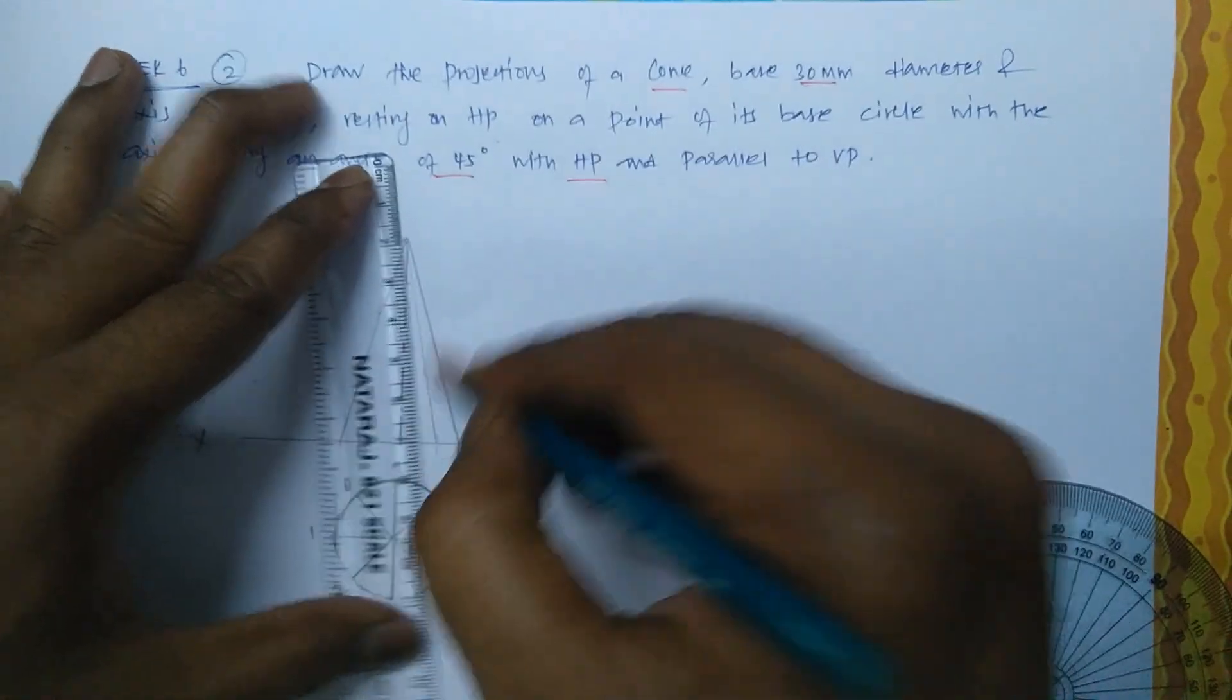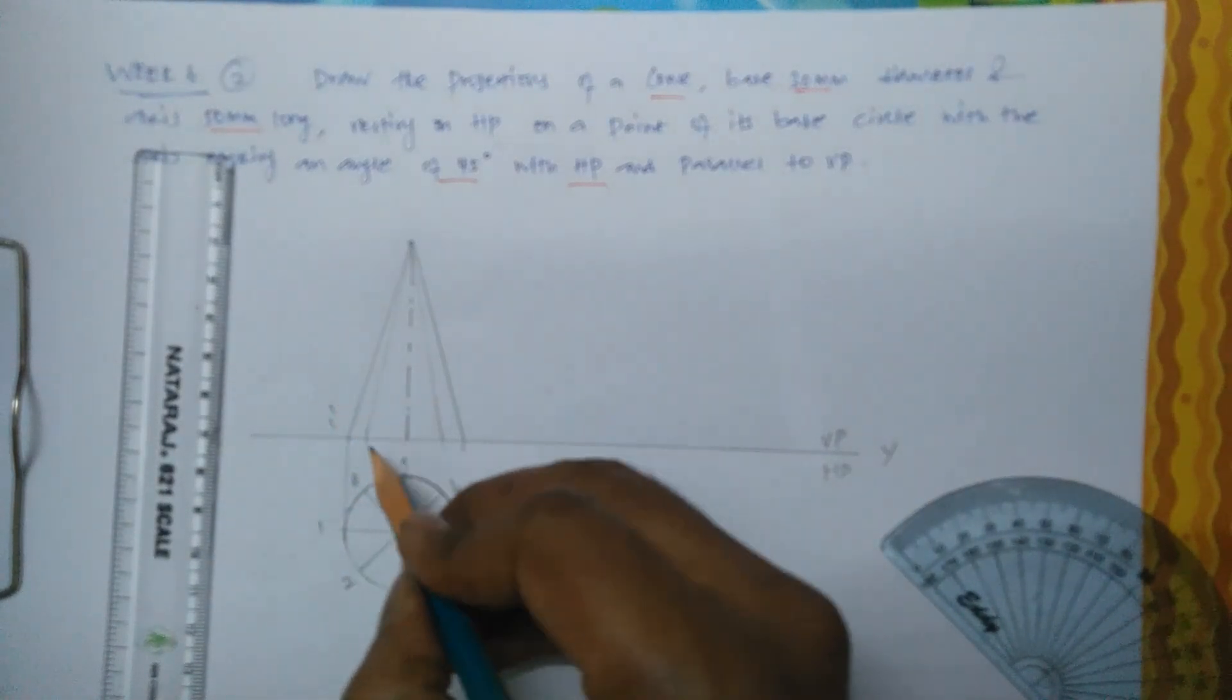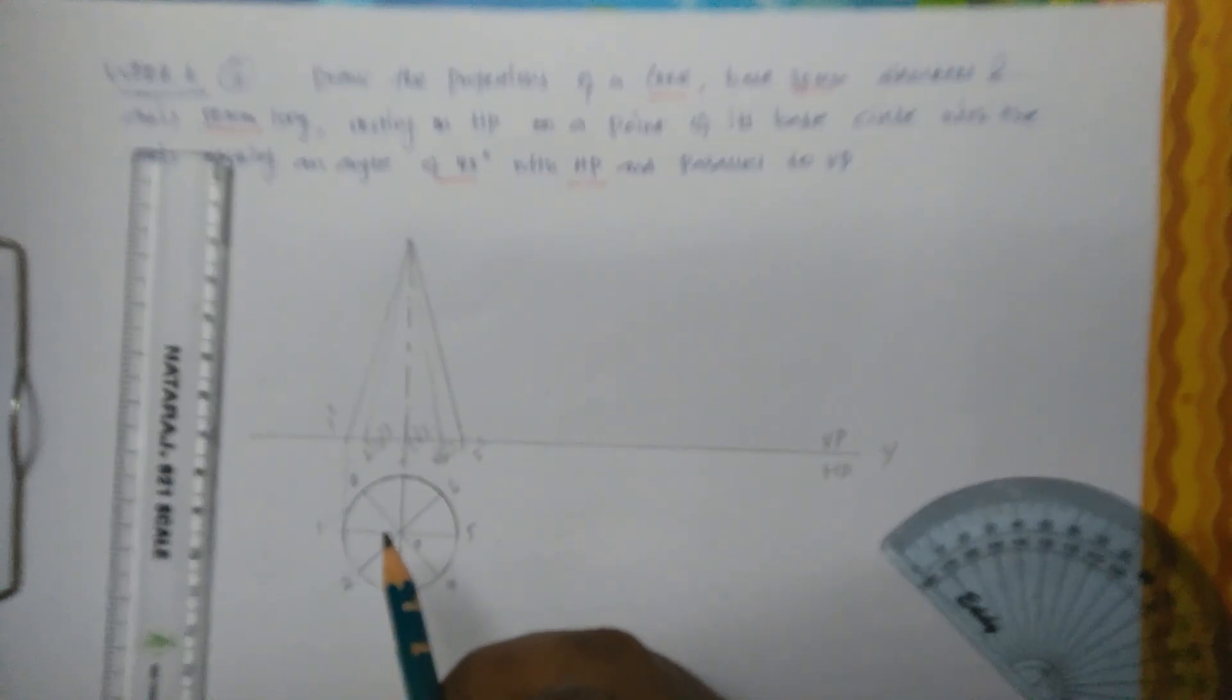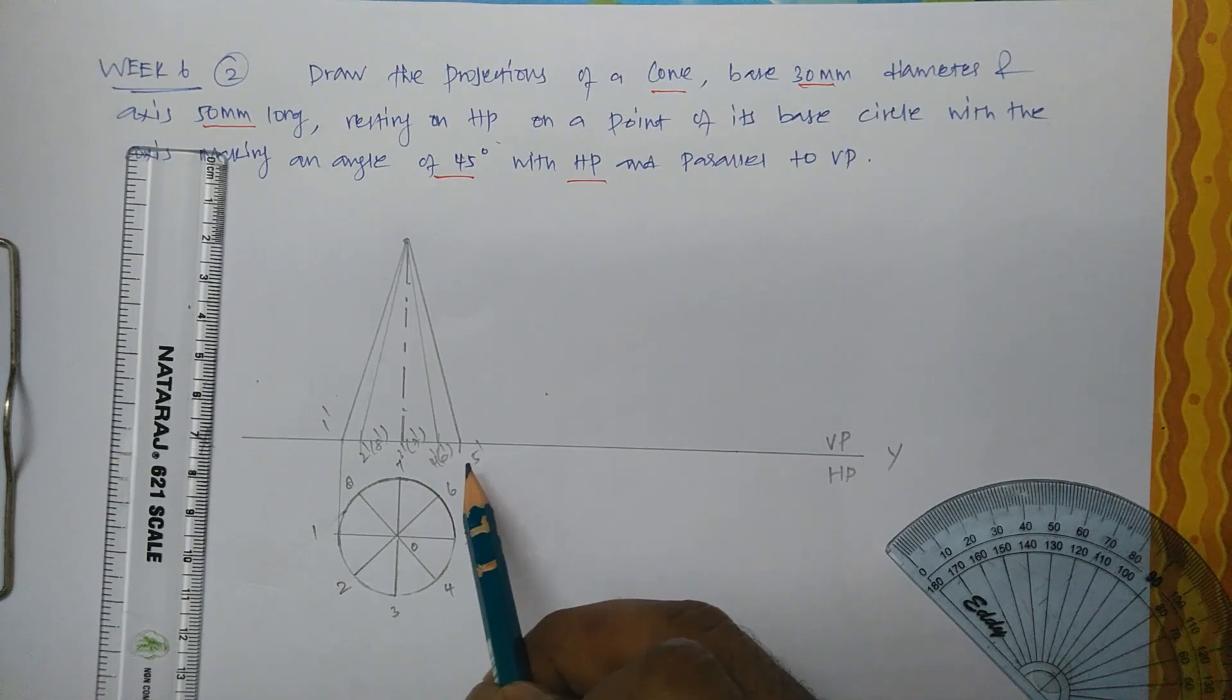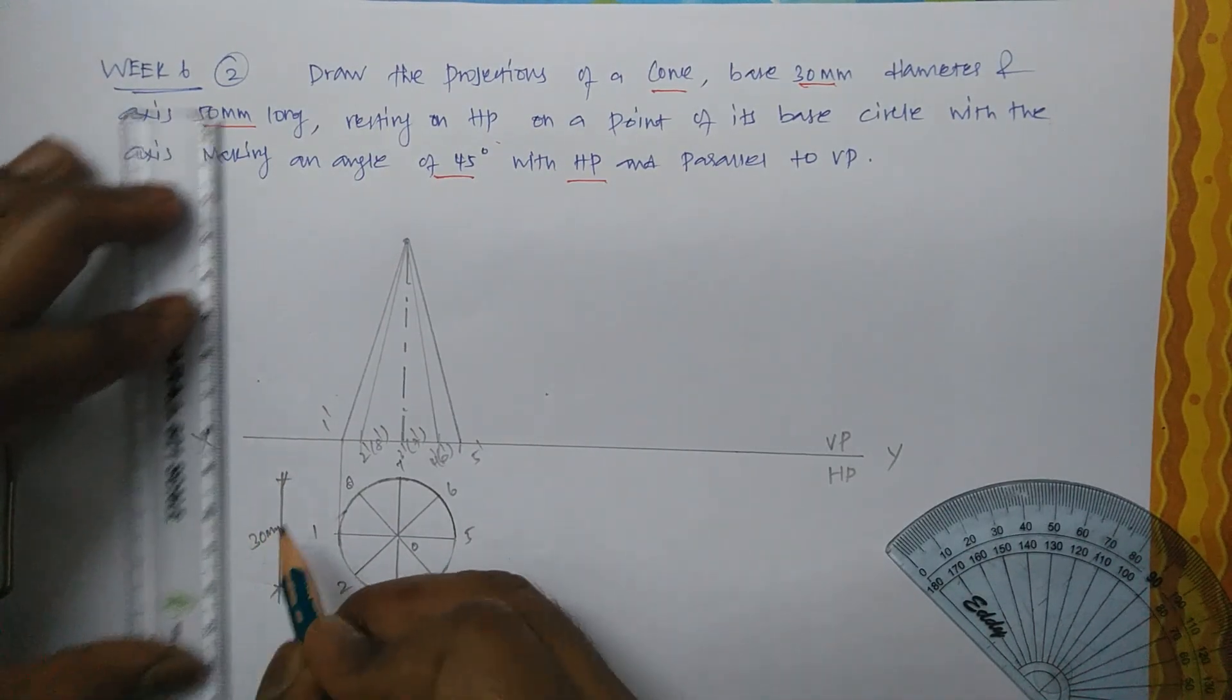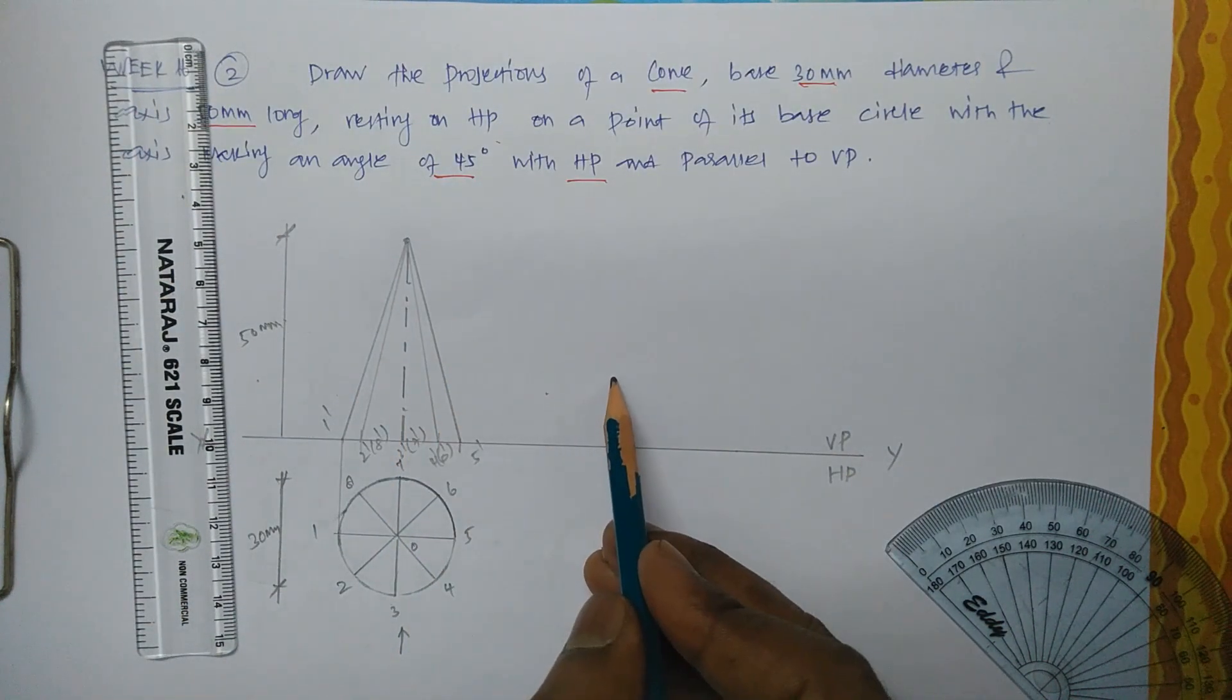You connect the apex to the base edge. Since it is a solid of revolution, you can connect if needed. This is 1 dash, 2 dash, 8 dash, 3 dash, 7 dash, 4 dash, 6 dash, and 5 dash. These are all the edges. 8, 7, 6 are hidden on the back side when you are looking from this direction. So this is 30 mm, the axis height is 50 mm. This axis we are going to tilt at 45 degrees.